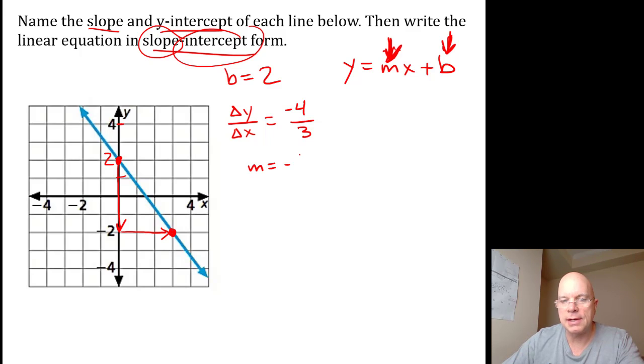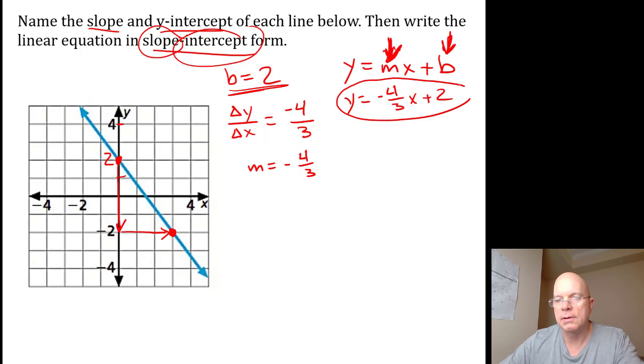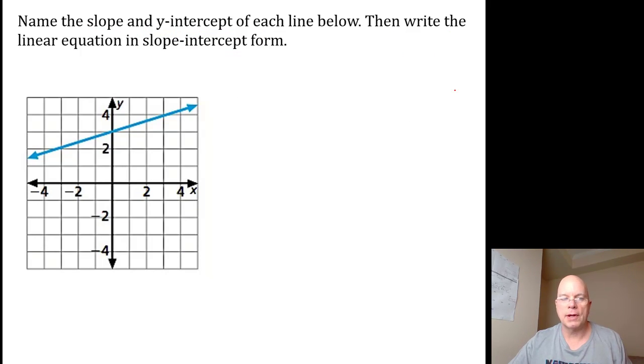So the slope, m, is negative 4 over 3, so y equals negative 4 over 3 x plus 2. I just substituted the b into the constant term. That's how you write the equation of a line from a graphed line. Try this one on your own.